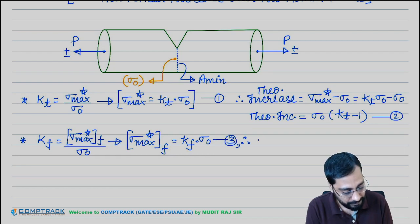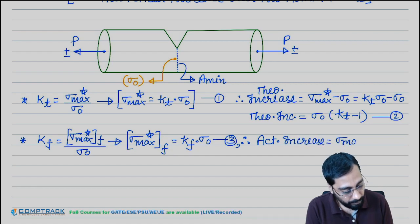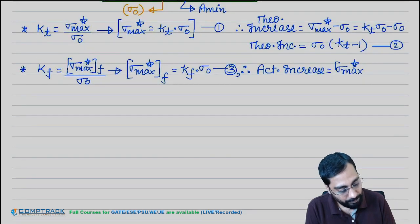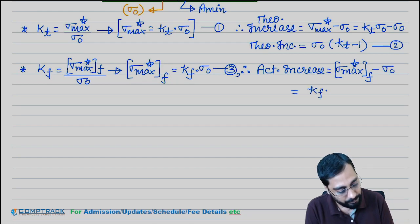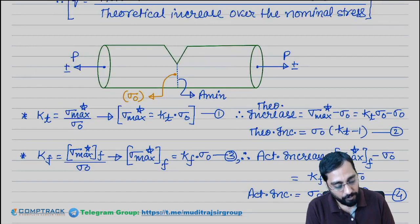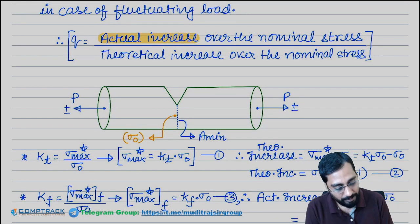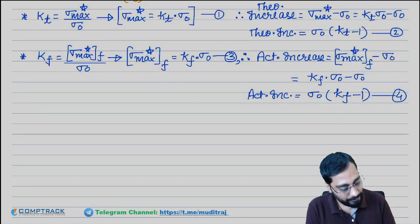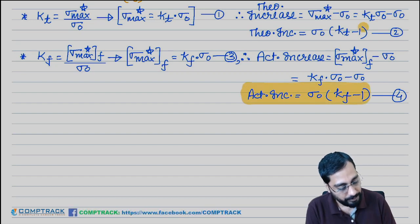So the actual increase in case of fluctuating loading: sigma maximum star of the fluctuating loading minus sigma naught. Taking sigma naught common, this becomes sigma naught times (KF minus 1). So what is q? q equals actual increase divided by theoretical increase.